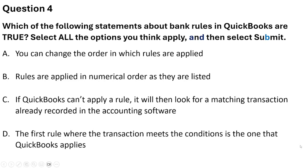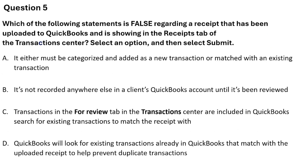Question 4: Which of the following statements about bank rules in QuickBooks are true? Select all that apply. Options: A) You can change the order in which rules are applied. B) Rules are applied in numerical order as they are listed. C) QuickBooks cannot apply a rule. D) The first rule where the transaction meets the condition is the one that gets applied. The correct answers are A, B, and D: you can change the order, rules are applied in numerical order, and the first matching rule is applied.